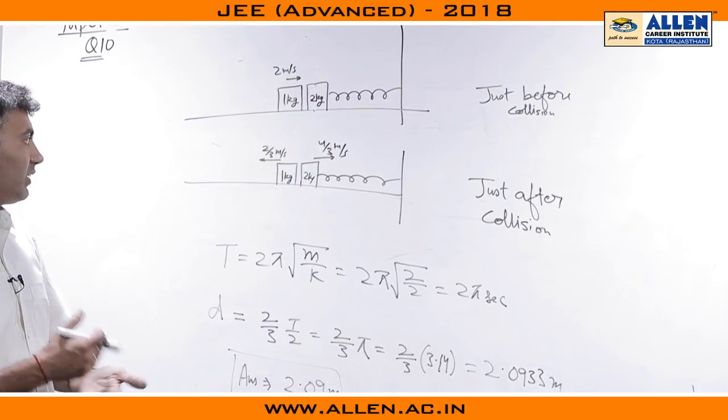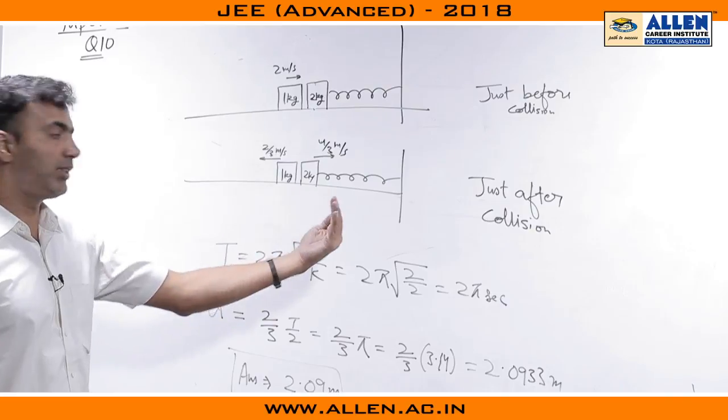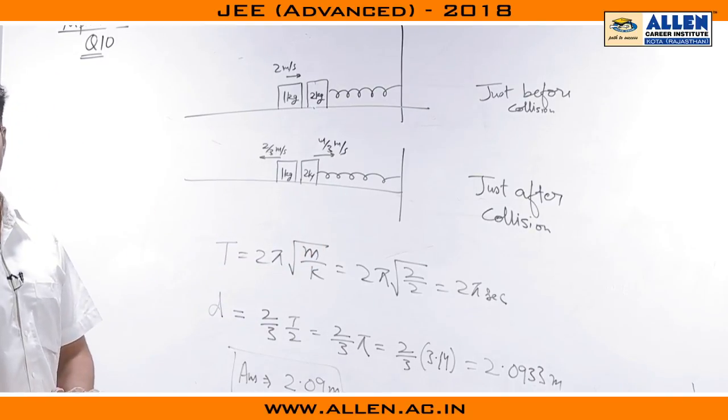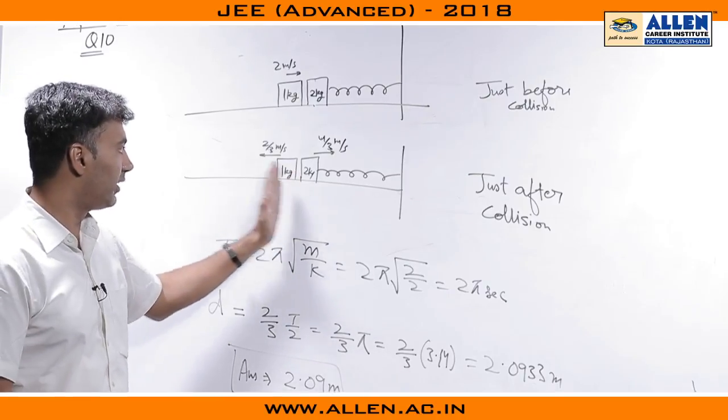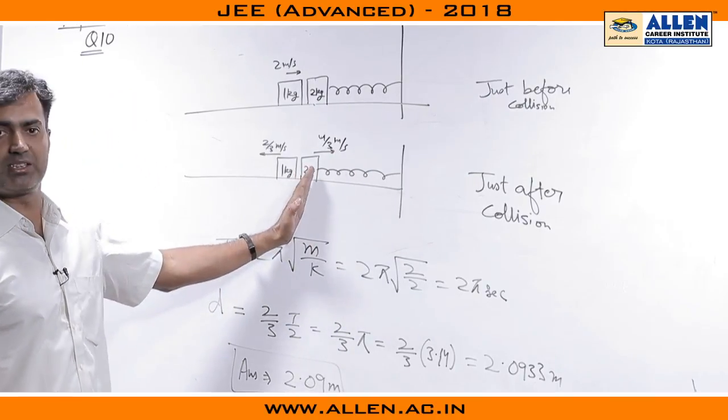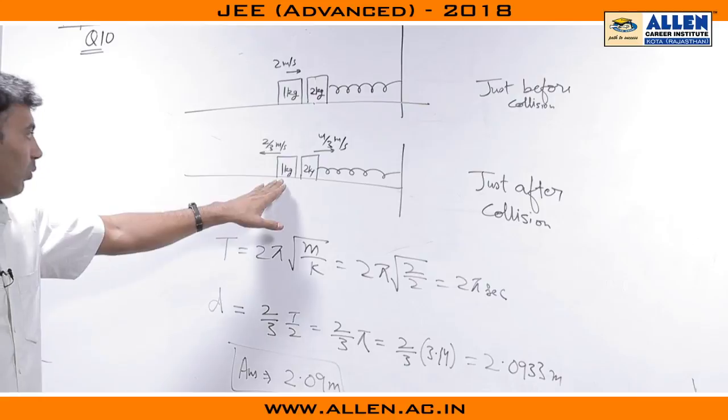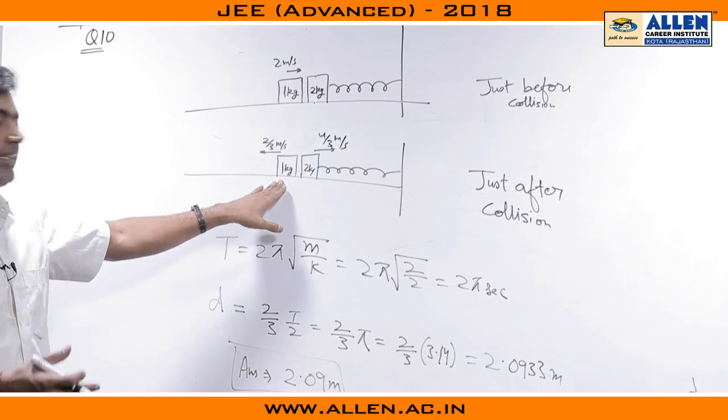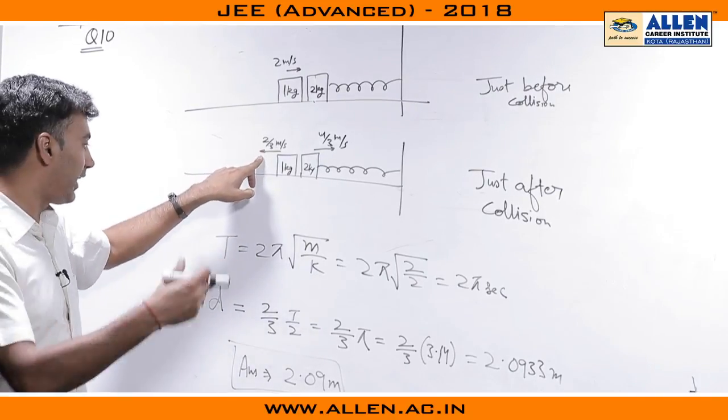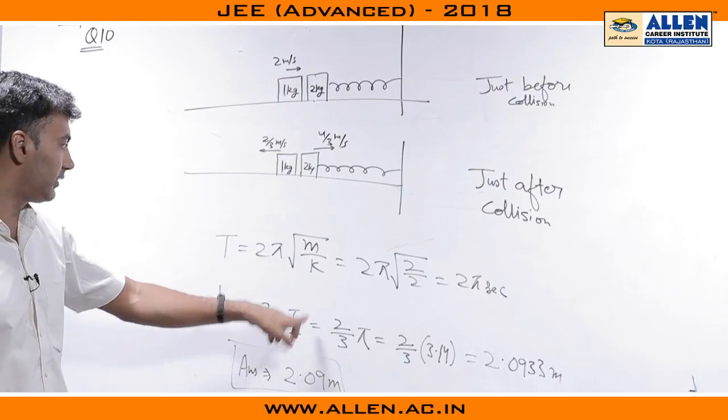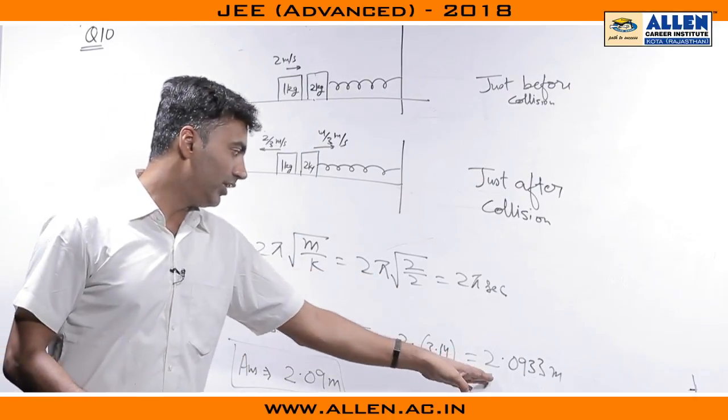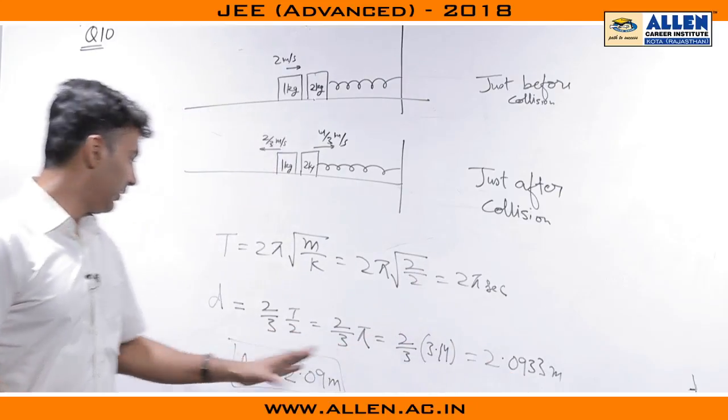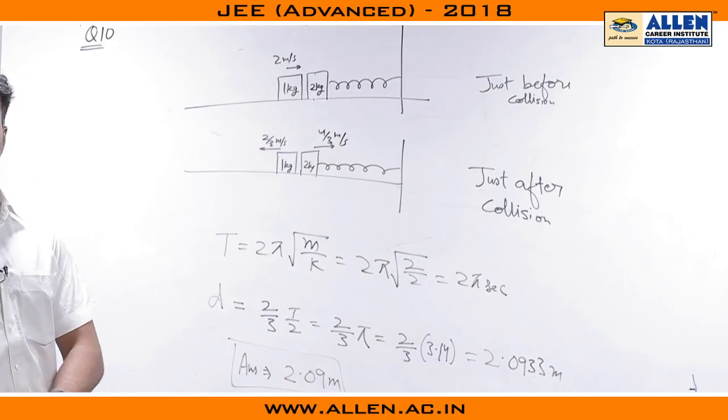The question asked what would the separation be by the time the 2 kg block comes back to its natural length, or the spring comes back to the relaxed position. That is half the time period. During that time, the 1 kg block would be maintaining a constant speed of 2 by 3, and the time taken would be half of the time period, that is pi seconds. So, 2 by 3 into pi gives you nearly 2.0933 meters, which could be approximated to 2.09 meters.